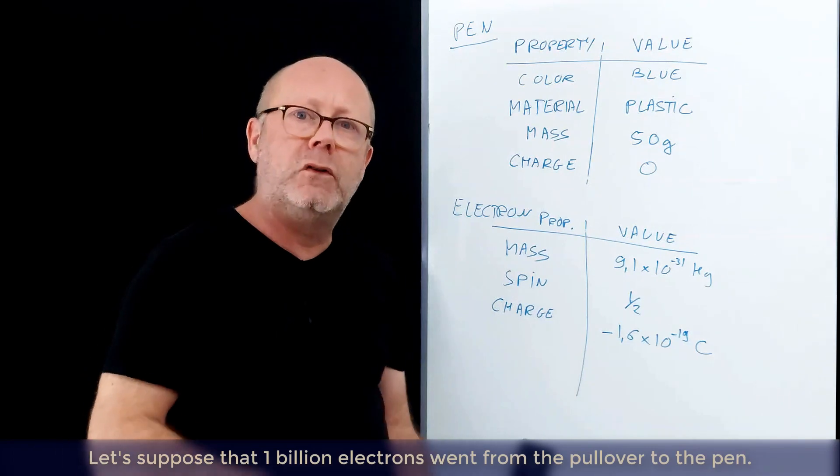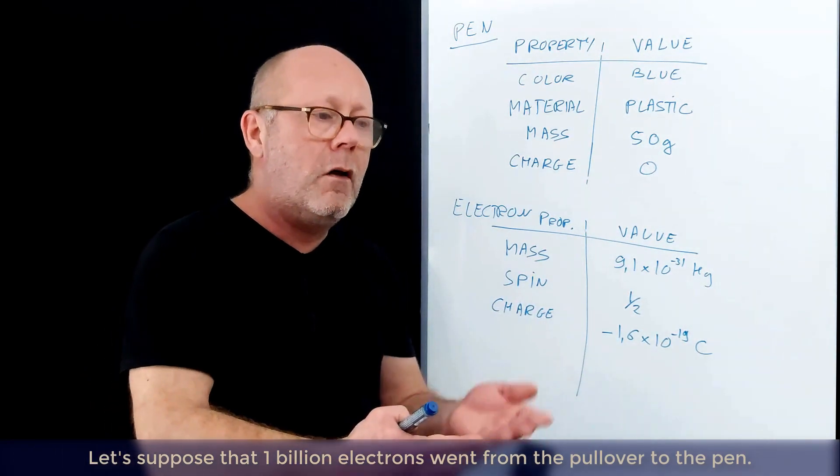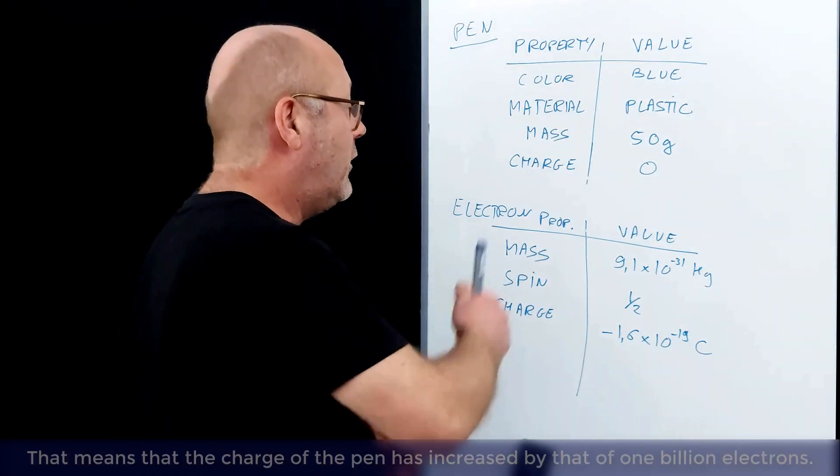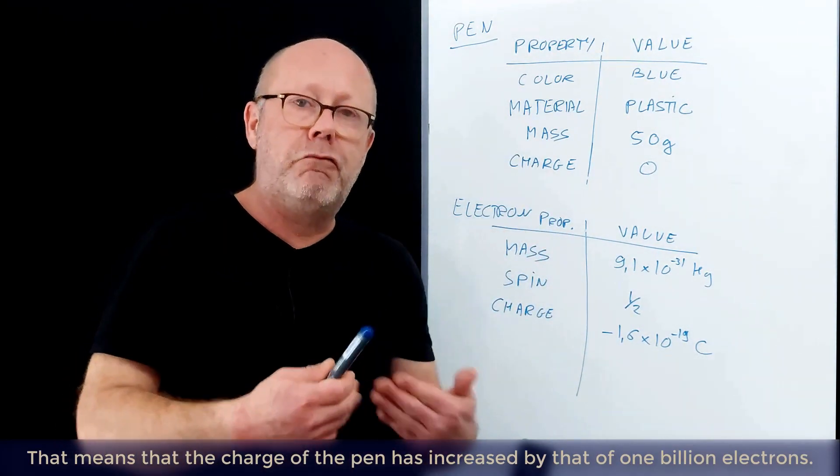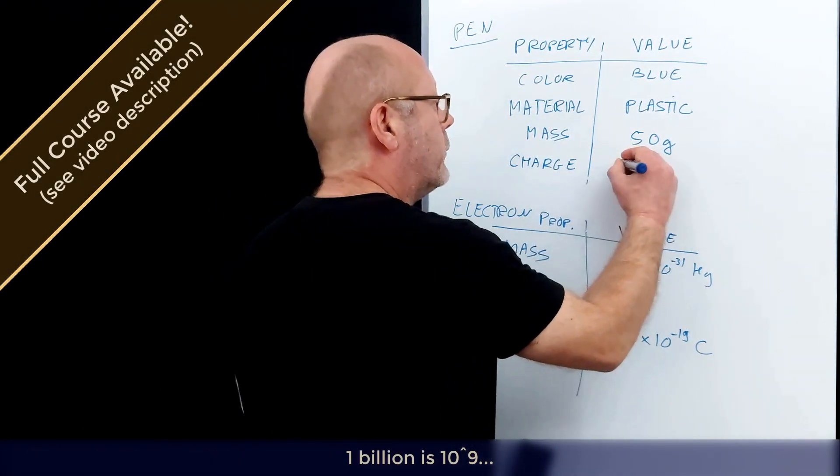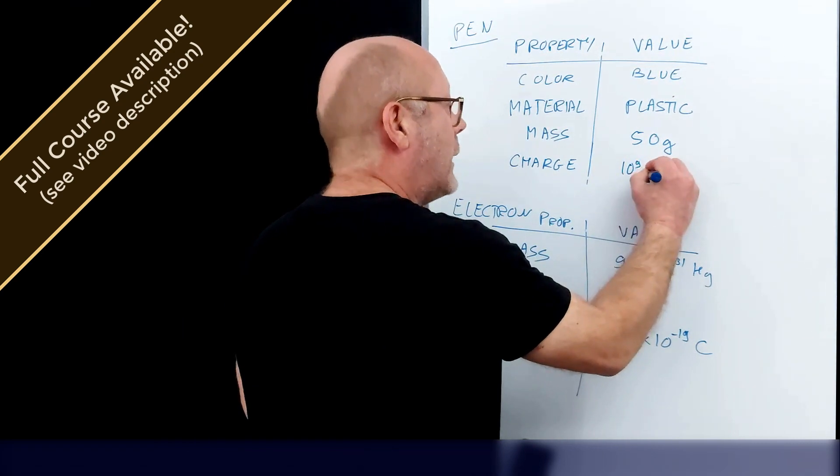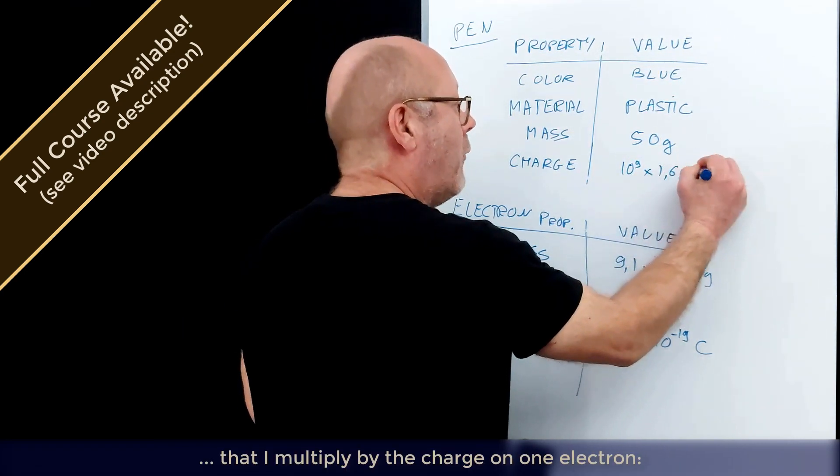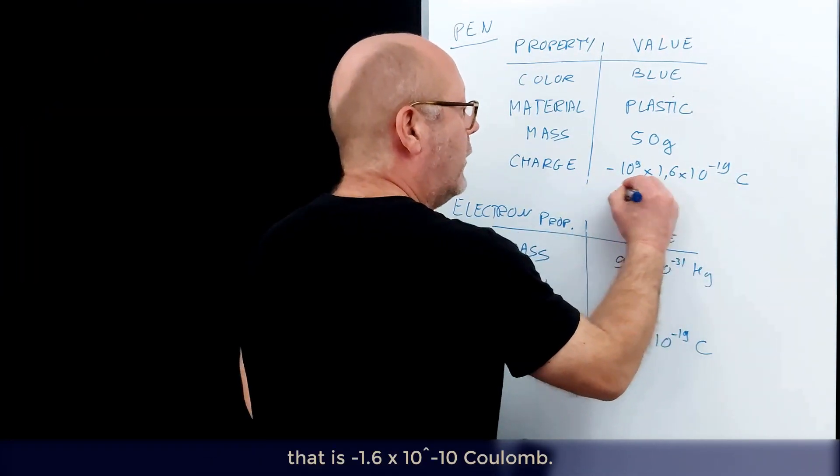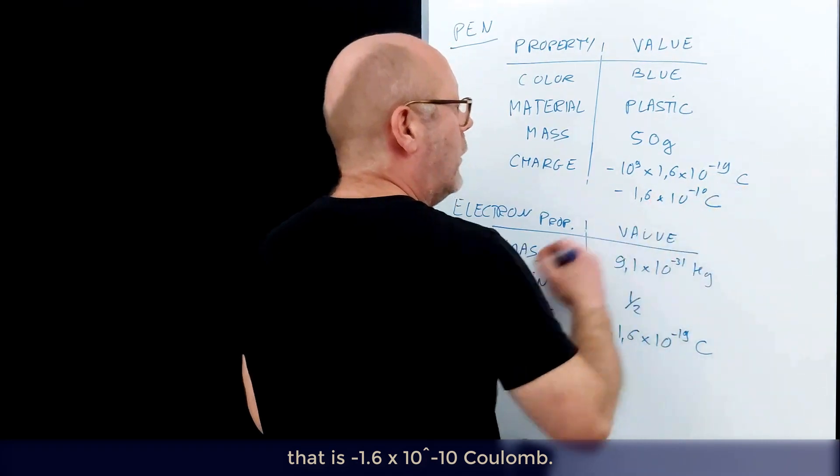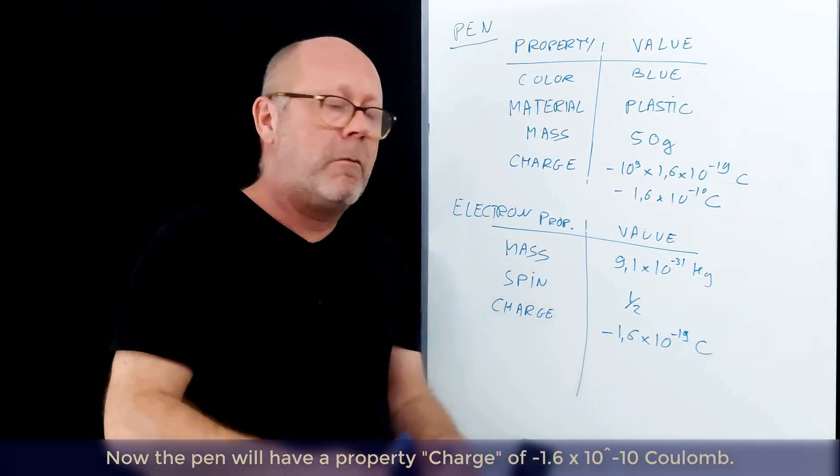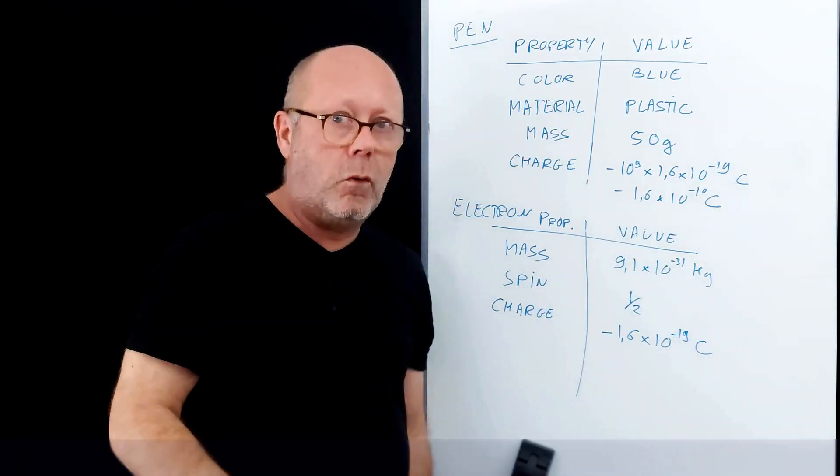So now let's suppose that 1 billion electrons went from the pullover to the pen. That means that the charge of the pen has increased by that of 1 billion electrons. 1 billion is 10^9, that I multiply by the charge of 1 electron. That is -1.6 × 10^-10 coulombs. Now the pen will have a property charge of -1.6 × 10^-10 coulombs.